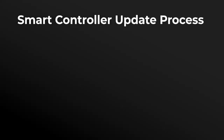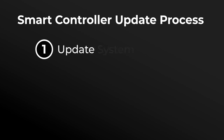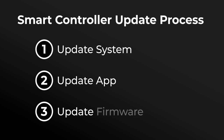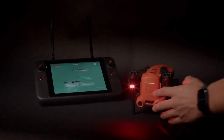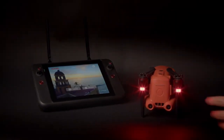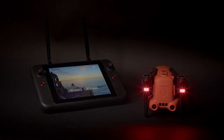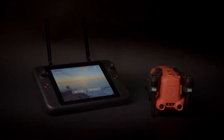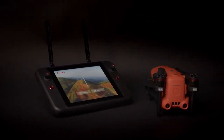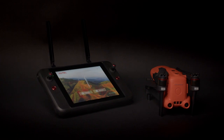The update should be done in the following order: system, then app, and lastly your firmware update. During the Smart Controller's system and app updates, make sure that your aircraft is powered off. Only power on your aircraft when going through the firmware update process.